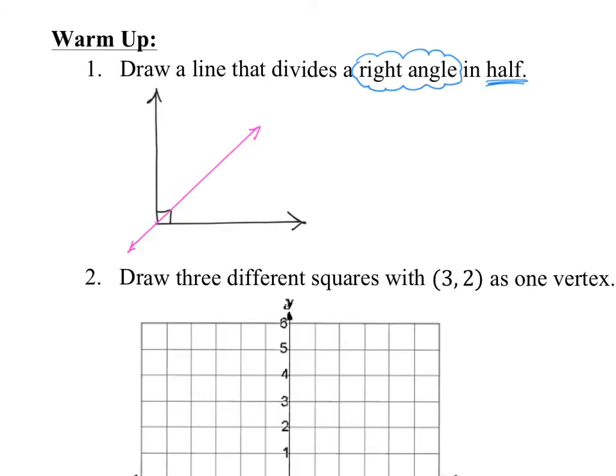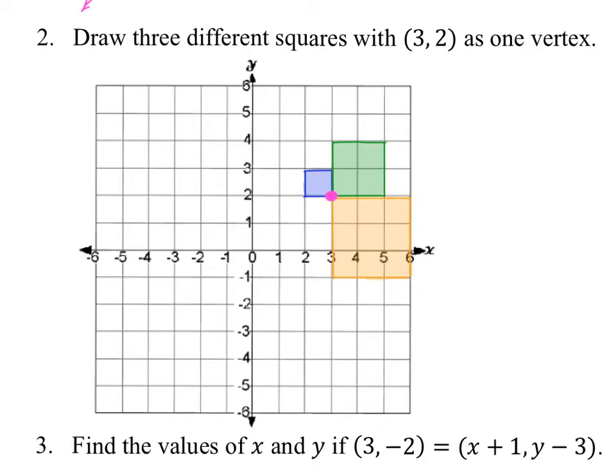Here is the correct picture for number 1. Draw a line that divides a right angle in half. Here is one of many possible answers for number 2. Draw three different squares with 3, 2 as one vertex. You can see there are three squares drawn here. This one could have had many different answers as long as one vertex of the square is at the coordinate 3, 2.